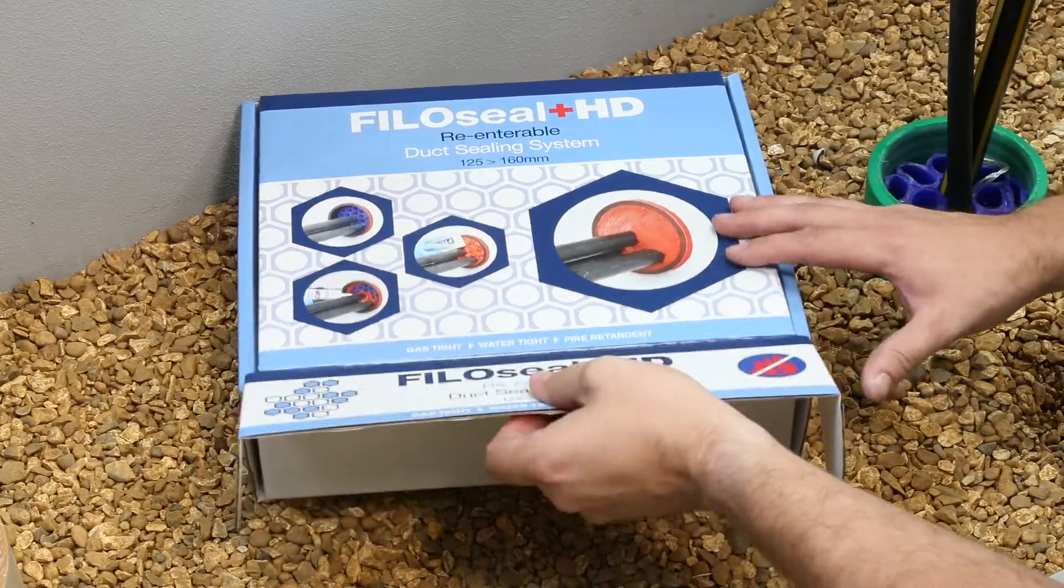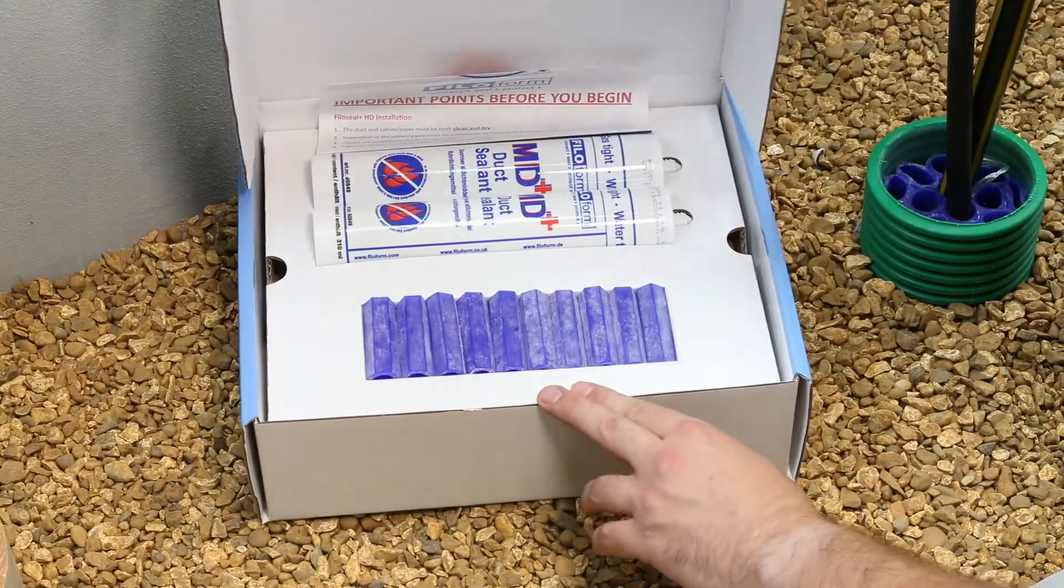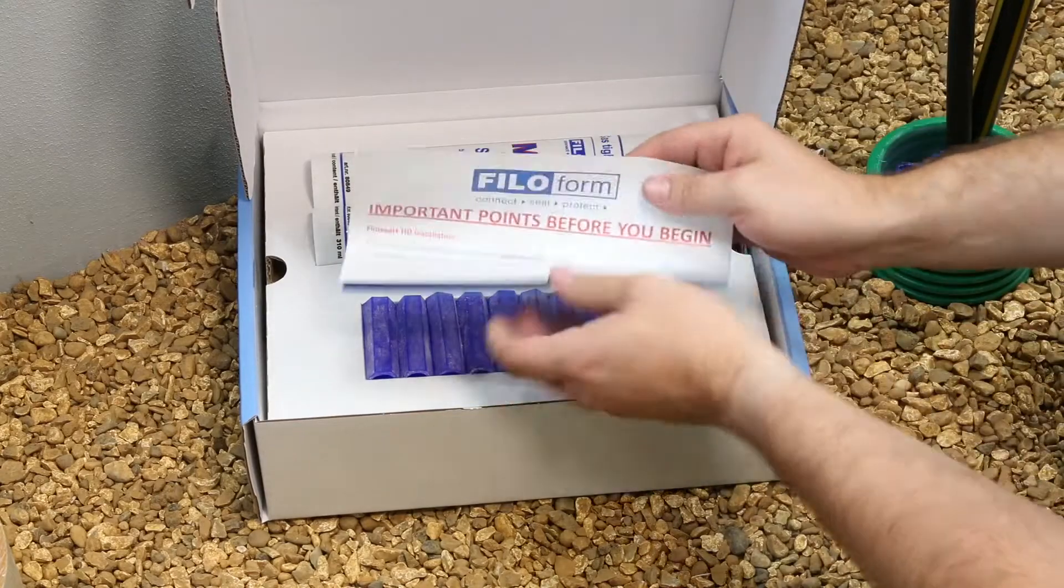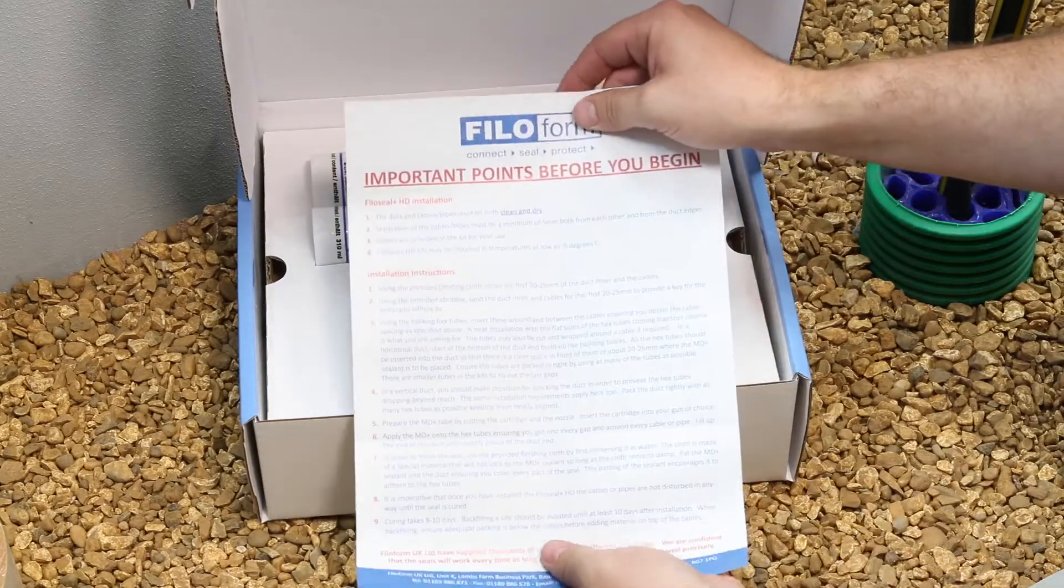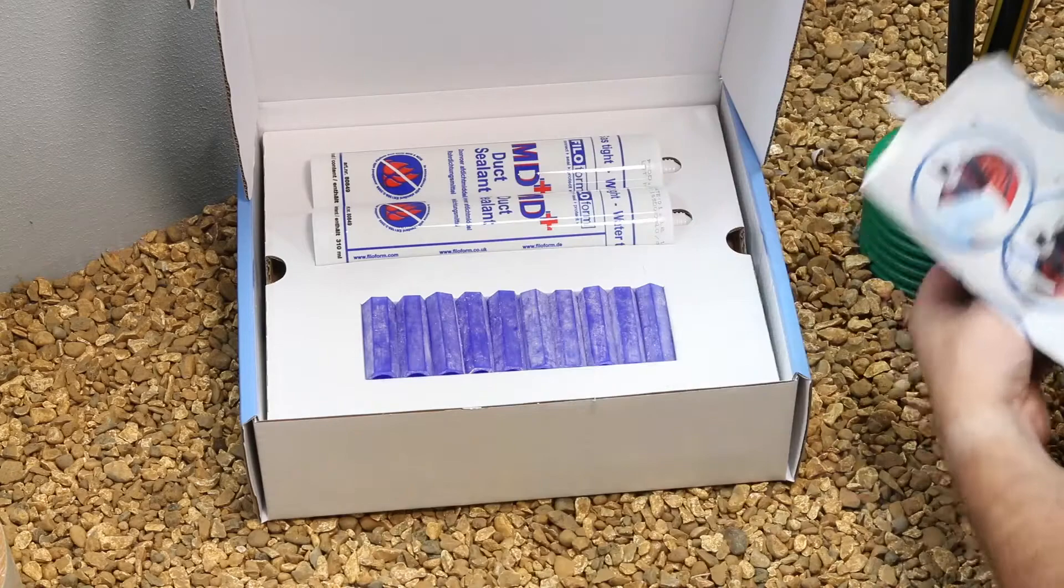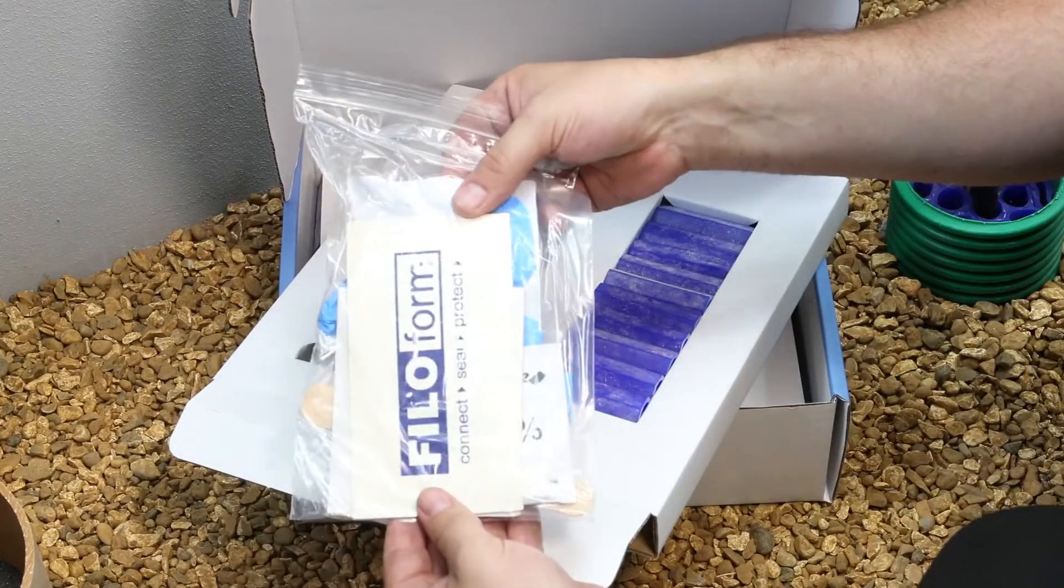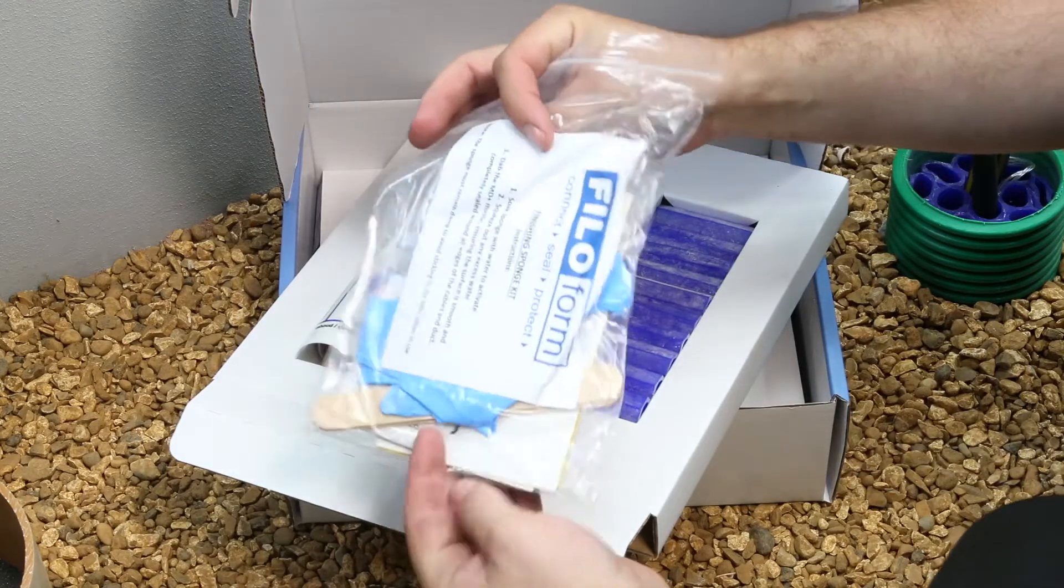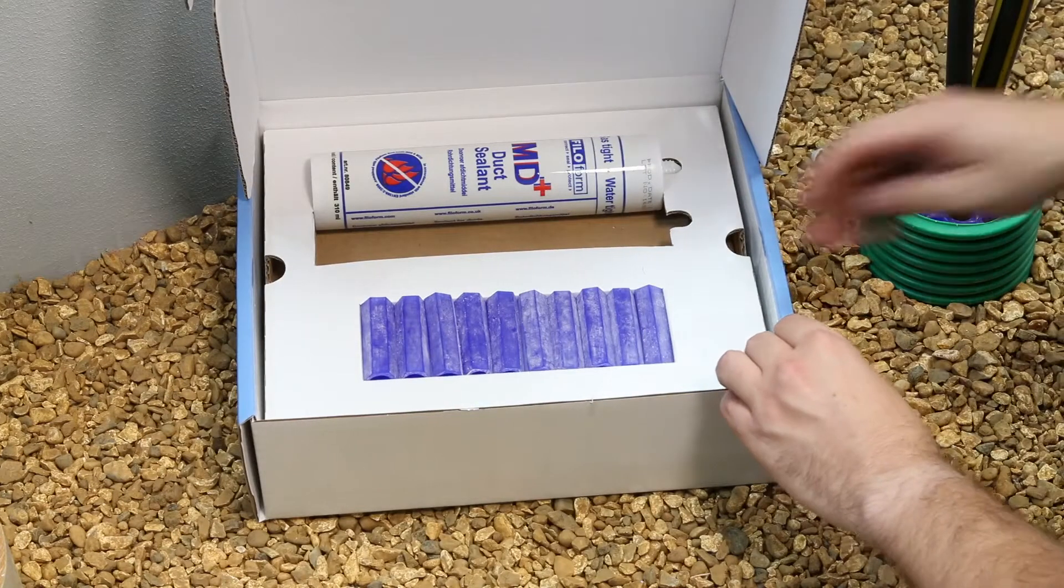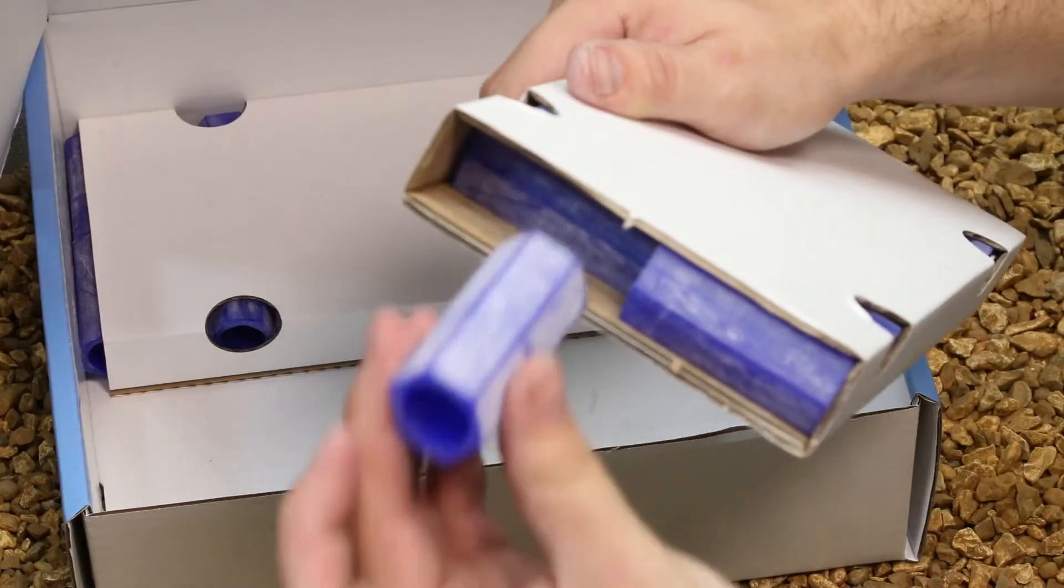Other sizes are also available. PhiloSeal Plus HD comprises of detailed instructions, small hexagonal tubes, MD Plus sealant, application and finishing kit with nitrile protective gloves, large hexagonal tubes.